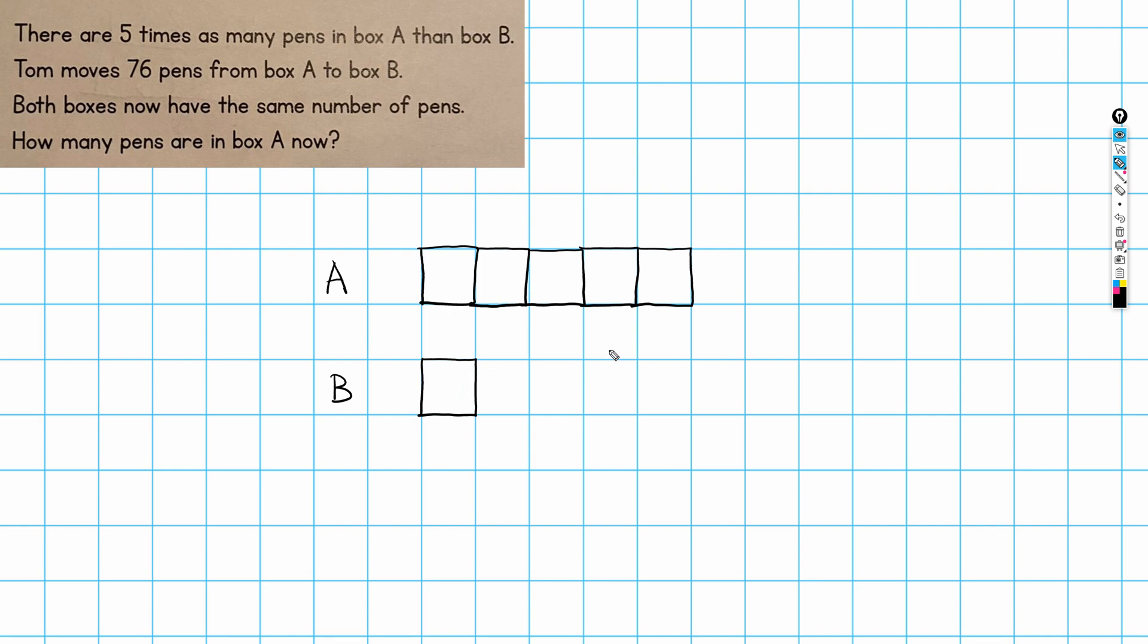So we now have a model that represents box A as having five times as many pens as box B. Right. So now what have we got? So this is the total number of pens, this part of the problem has been drawn out. And we're told that Tom moves, because these are Tom's pens, moves 76 pens from box A to box B. And when he does that, after he's done that, both boxes will have the same number of pens.